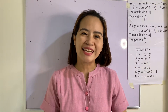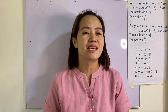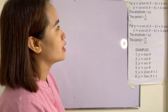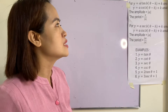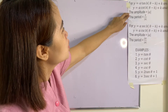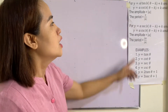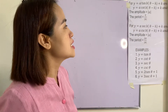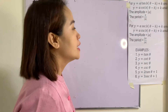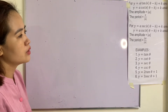Good day everyone, welcome back to my channel. Our most essential learning competency for today is finding the amplitude and period of the tangent, cotangent, secant, and cosecant functions. For y = a·tan(b(θ − h)) + k and y = a·cot(b(θ − h)) + k, the amplitude equals |a| and the period equals π/|b|. For y = a·sec(b(θ − h)) + k and y = a·csc(b(θ − h)) + k, the amplitude equals |a| and the period equals 2π/|b|.